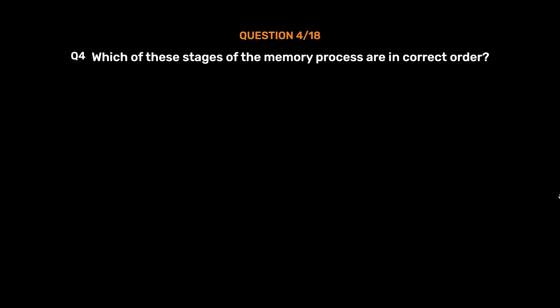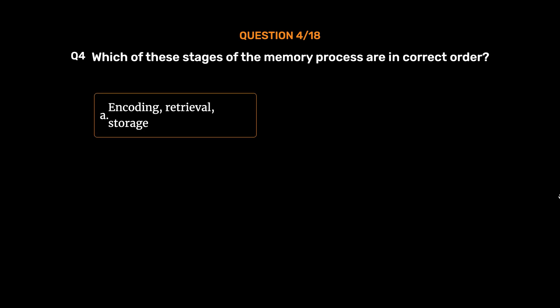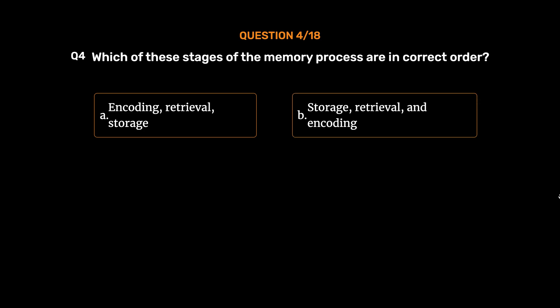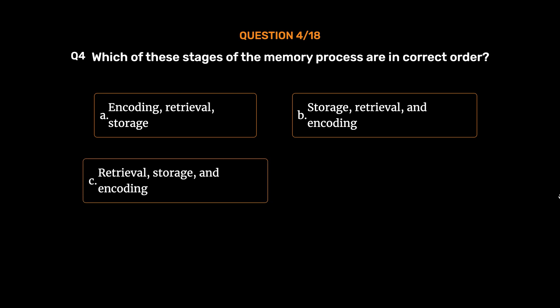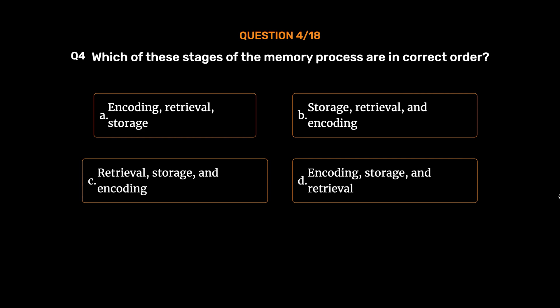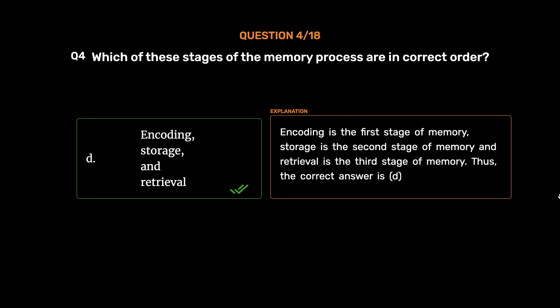Question number 4. Which of these stages of the memory process are in correct order? Option A: Encoding, Retrieval, Storage. Option B: Storage, Retrieval, and Encoding. Option C: Retrieval, Storage, and Encoding. Option D: Encoding, Storage, and Retrieval. The correct answer is Option D. Encoding is the first stage of memory, Storage is the second stage, and Retrieval is the third stage.